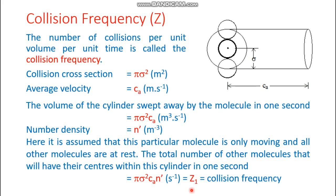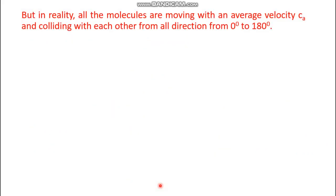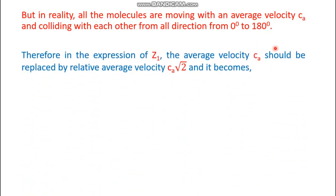Why is Z1 only a temporary equation? Because it is based solely on 180-degree collisions. In reality, all molecules are moving with average velocity CA and colliding from all directions — 0° to 180°. Taking the mean angle of 90°, CA must be replaced by the relative average velocity, which is CA√2. So Z1 becomes π sigma² CA√2 n'.